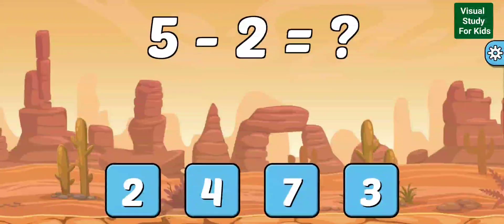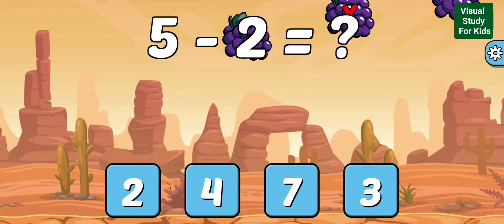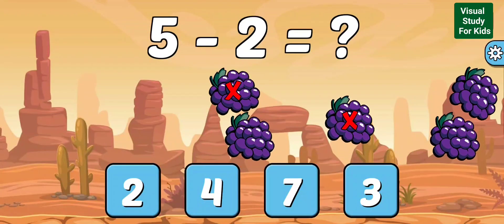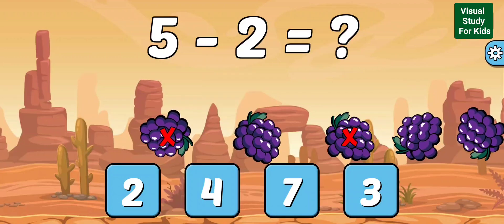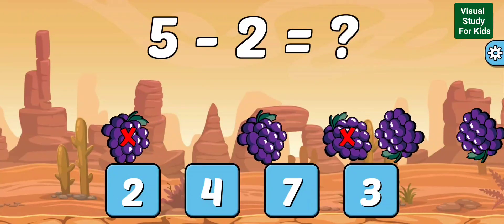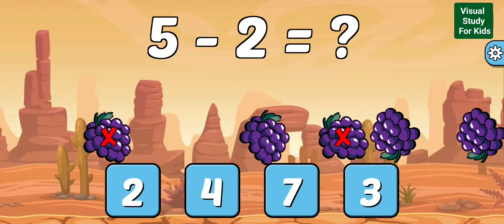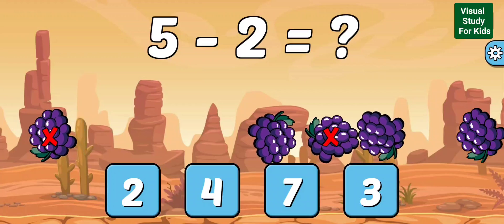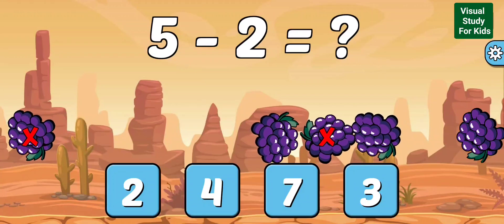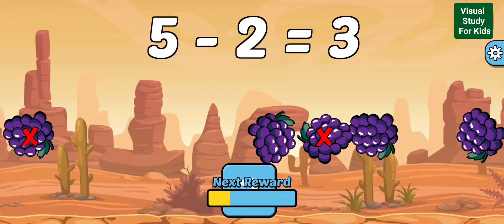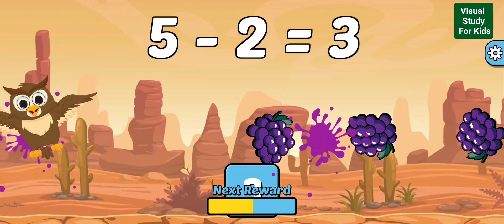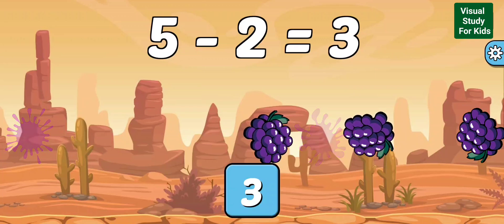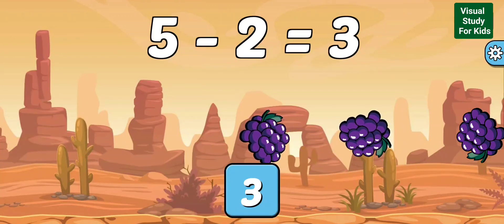5 minus 2 equals 3. Correct. 5 minus 2 equals 3.